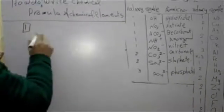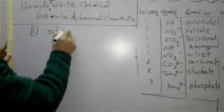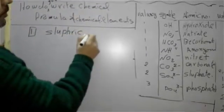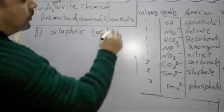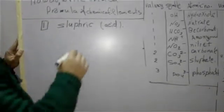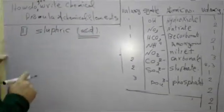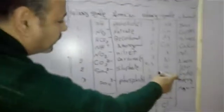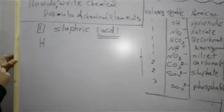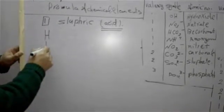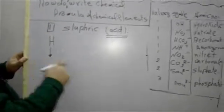When you write the formula of sulfuric acid, how? Number one, every acid will be getting the hydrogen. In the left area, you write hydrogen with its balancing, monovalent once.